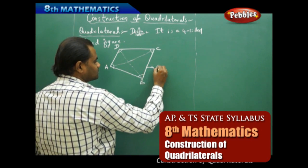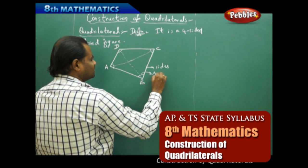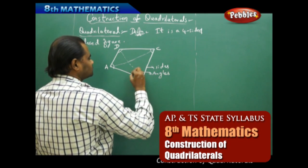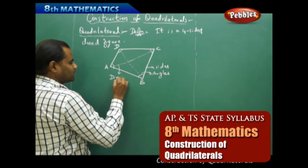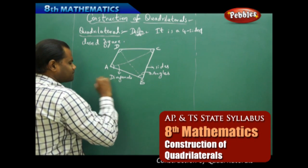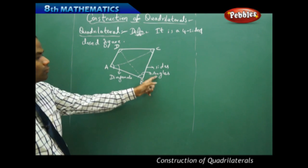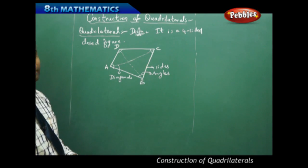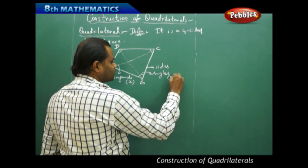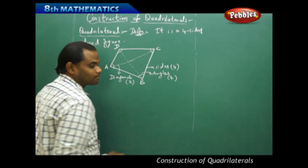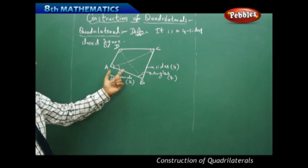So these are the sides, these are the angles, and these are the diagonals. A quadrilateral has four sides, four angles, and two diagonals. Diagonals are two in number, angles are four in number, and sides are four in number. This is the basic structure of a quadrilateral.